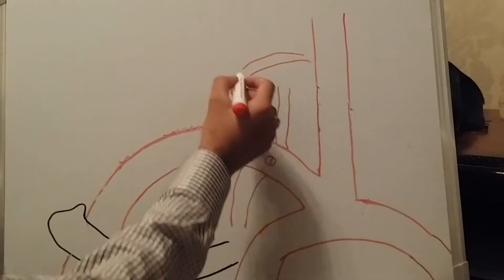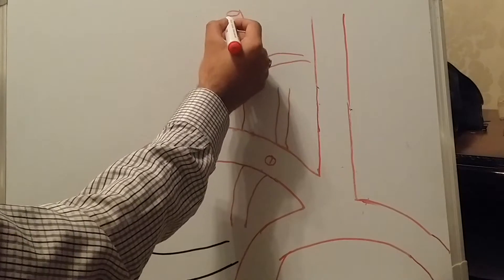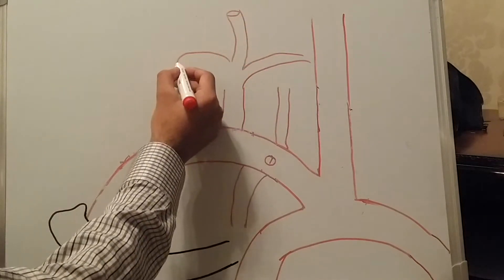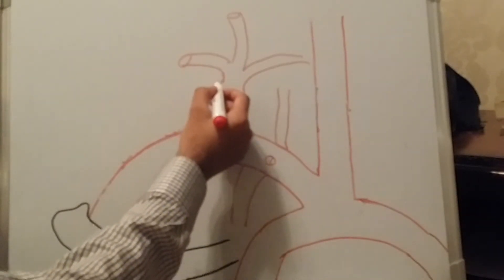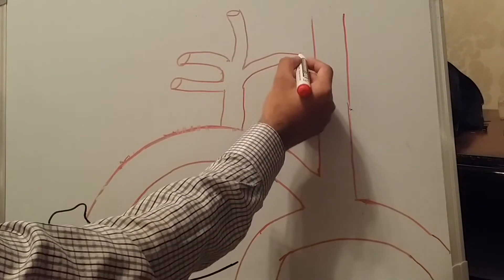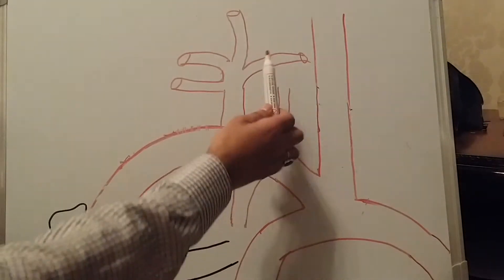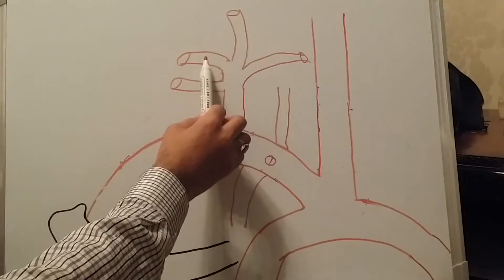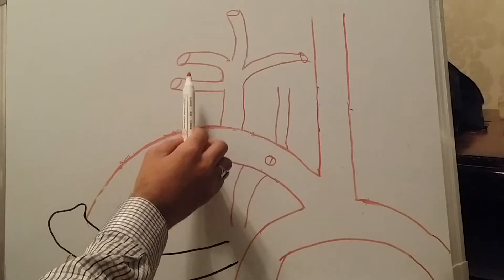The thyrocervical trunk gives rise to four branches: one branch going upward is the ascending cervical branch, the second is the transverse cervical branch, the third is the inferior thyroid artery, and the fourth is the suprascapular artery — all originating from the thyrocervical trunk.